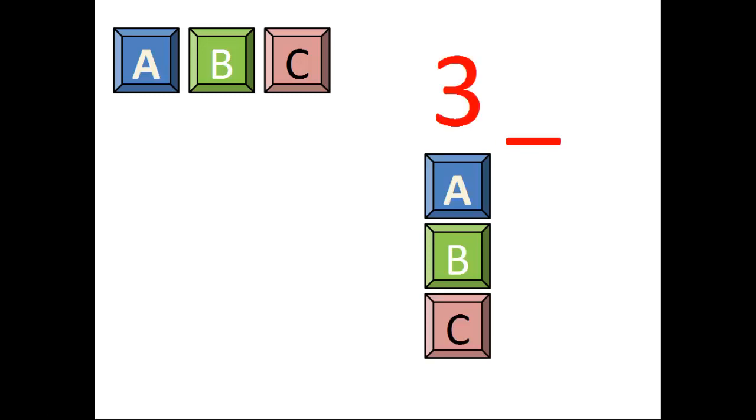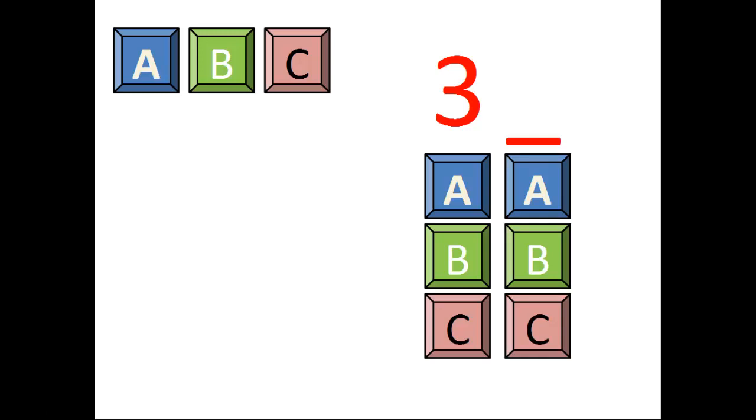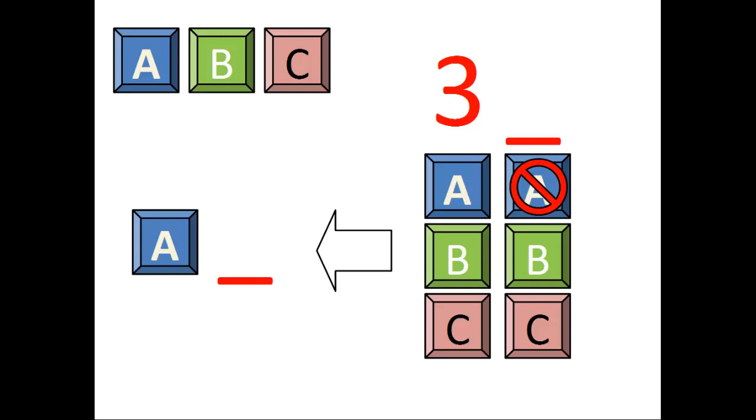Now we take a look at the second letter. How many options are there? If we choose A for our first letter, we can't choose A again for our second letter. We can choose B or C, so there are two options. If we chose B for our first letter, then we can't choose B for our second letter, so we'd have two options again, A or C. Similarly, we have two options if we choose C for our first letter. Thus, no matter what letter we choose for our first letter, we always have two options for our second letter.